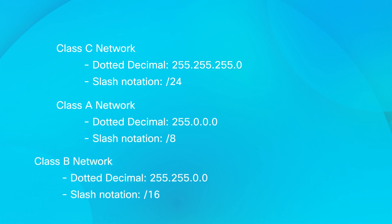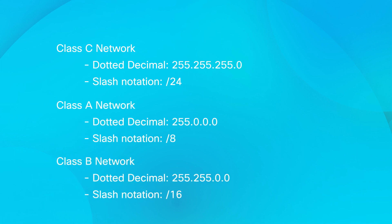For a long time, all networks were either a slash 8, slash 16, or slash 24. These were called classful networks. When a network didn't require all the addresses, the rest went to waste. About 30 years ago, classless interdomain routing — CIDR — was introduced, and subnetting became an option. This game-changer allowed you to create subnets of different sizes, helping conserve IP addresses and provide more efficient routing.